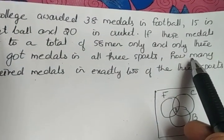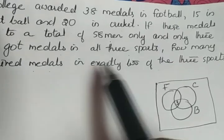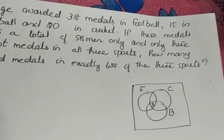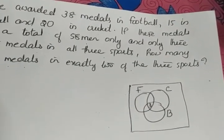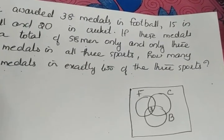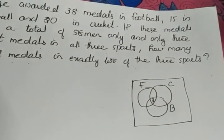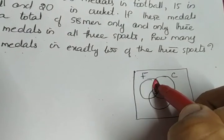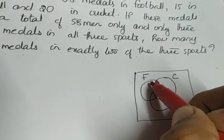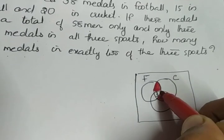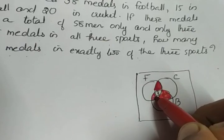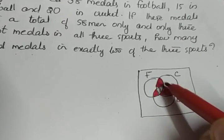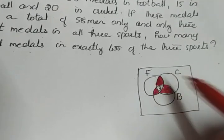We have to find the number of people who received a medal in exactly 2 of the 3 sports. Exactly 2 means either football and cricket, or cricket and basketball, or football and basketball. In the Venn diagram, the red-colored portions represent these: one for football and cricket, one for basketball and cricket, and one for football and basketball.